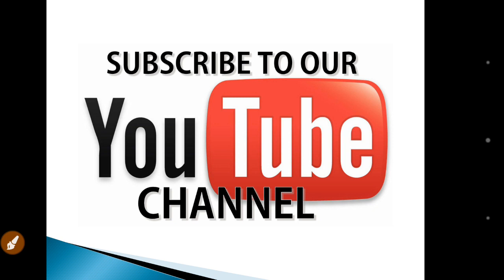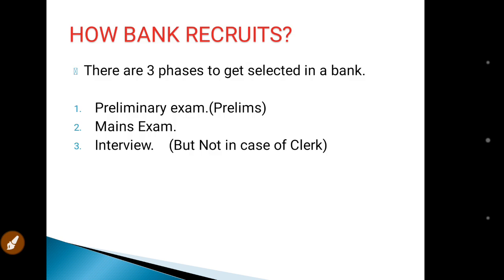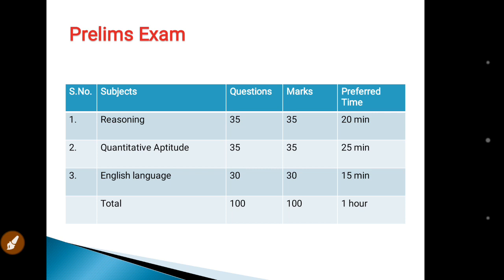Let us understand how bank recruitment works. Bank recruits in three phases. First is the preliminary exam — prelims. Second, after clearing prelims, you move to the mains exam. Then if you clear mains, you go to interview. In clerk exams, there is no interview — after mains, selection is based on the merit list. In PO exams, you must attend an interview. For some banks like Bank of Baroda or SBI PO, there is also a group discussion along with the interview — 50 marks for GD and 50 marks for personal interview. For IBPS PO, there is only an interview.